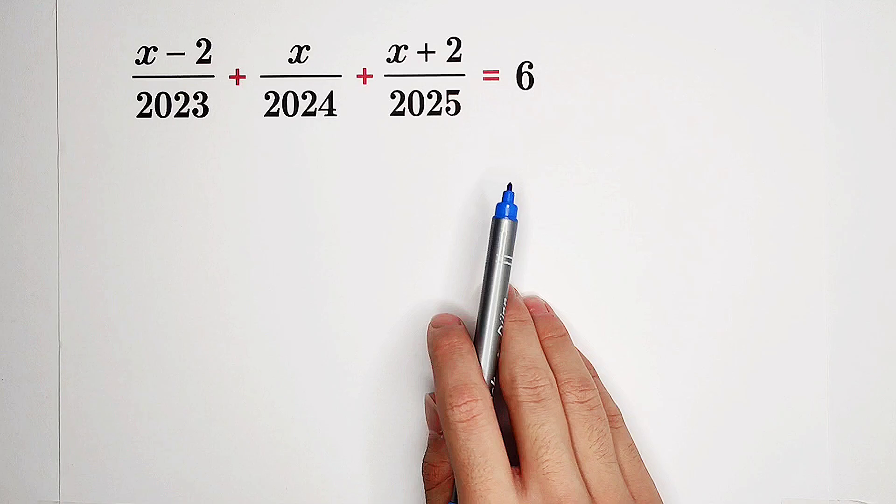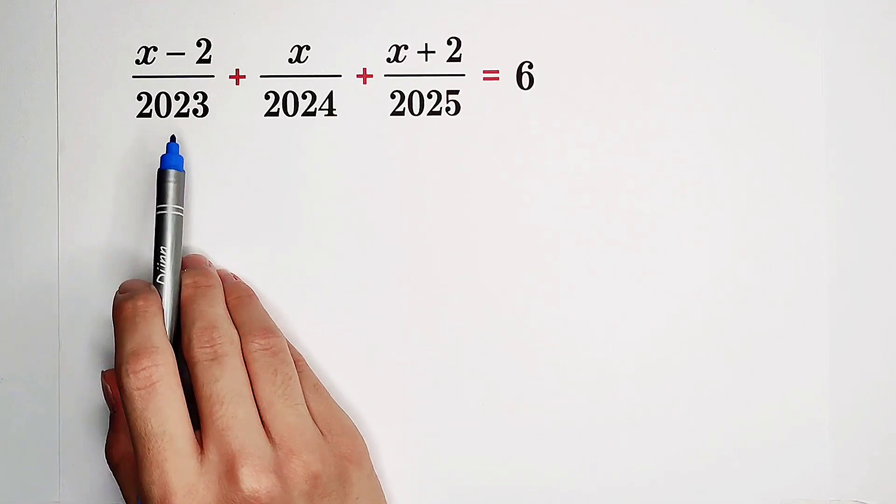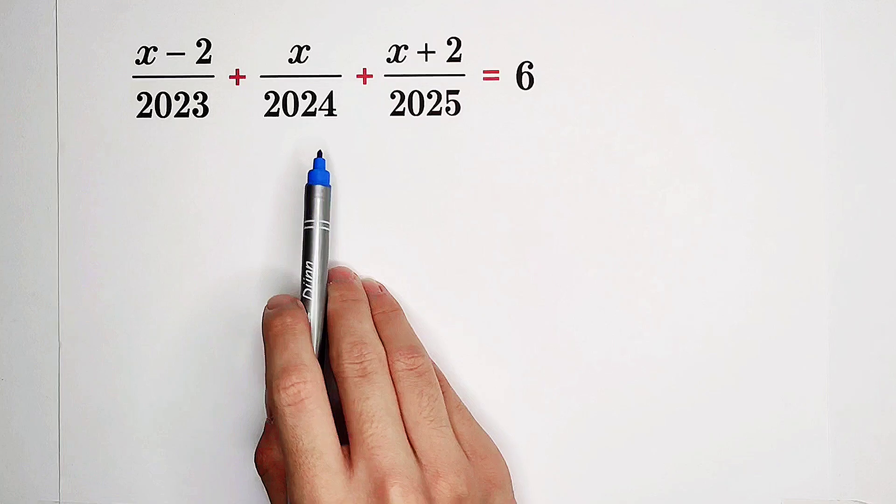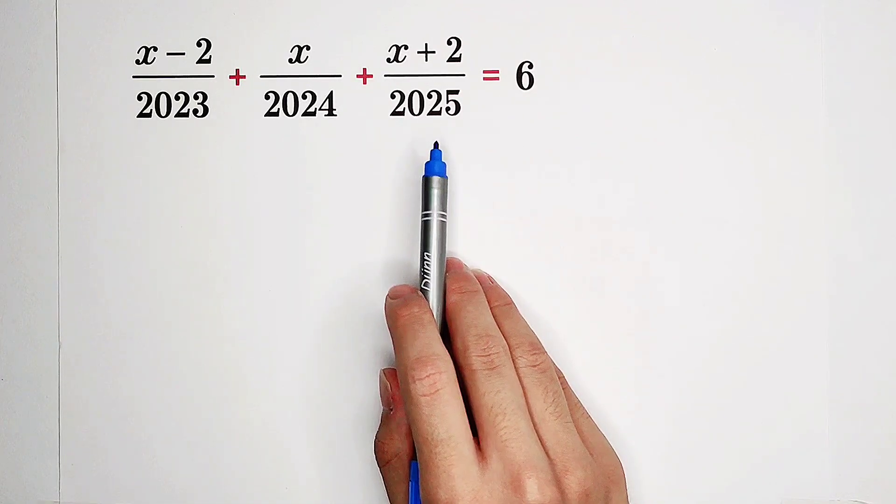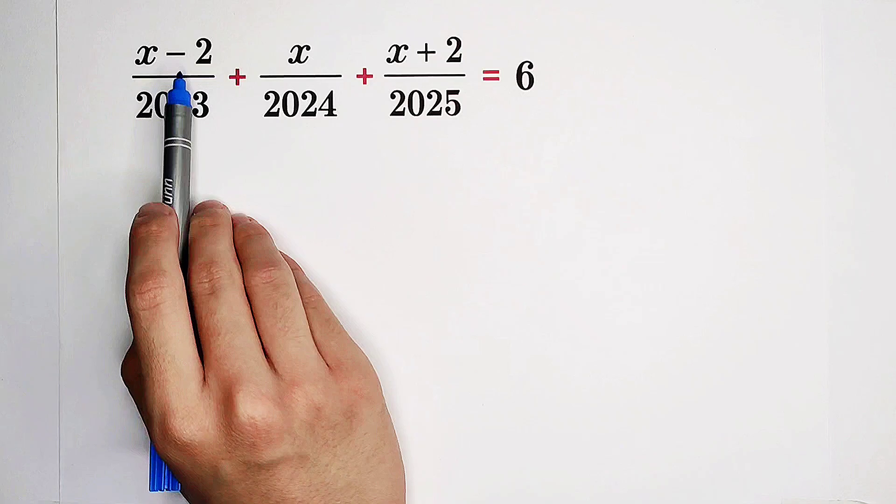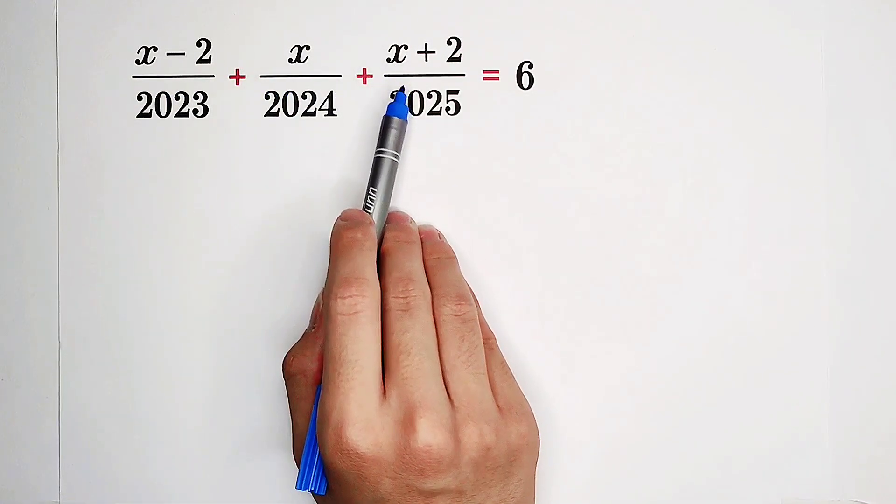Now, have a look at the denominators: 2023, 2024 (this year), and 2025 (next year). What about the numerators? X minus two, X (which is X plus zero), and X plus two.